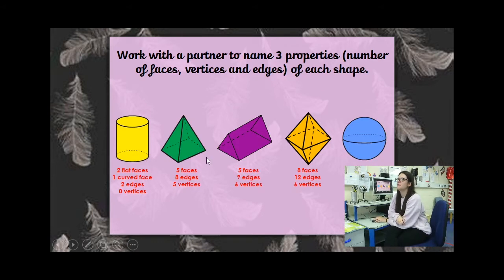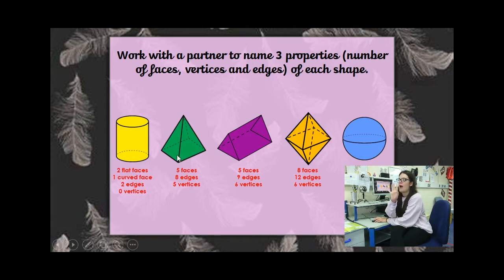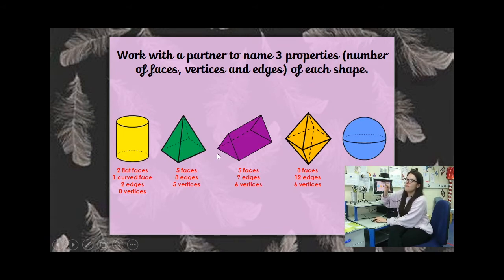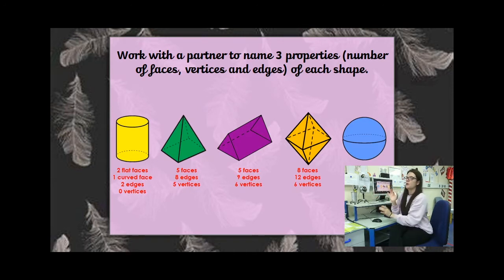Let's look at our square-based pyramid. Here we have five faces: four isosceles triangles and a square on the bottom. We have eight edges — one, two, three, four, five, six, seven, eight. At home, it might be worth drawing along with your fingers. Then the vertices — the bits where edges meet — one, two, three, four, five.